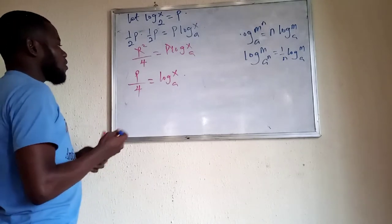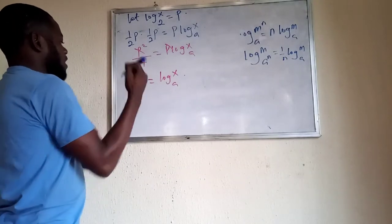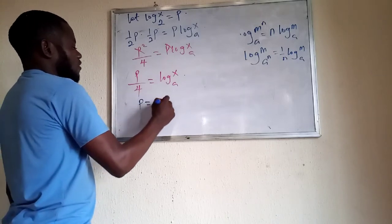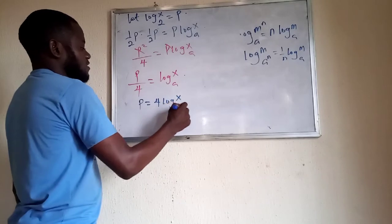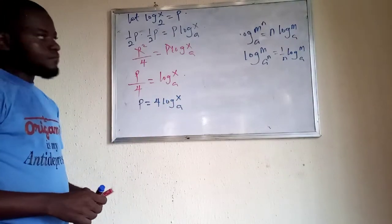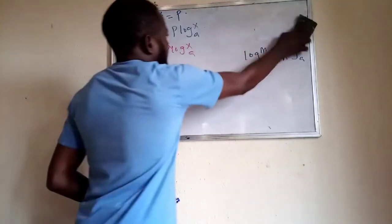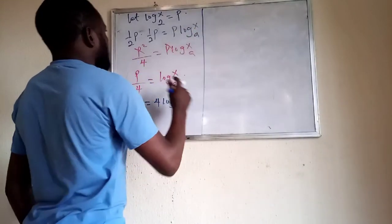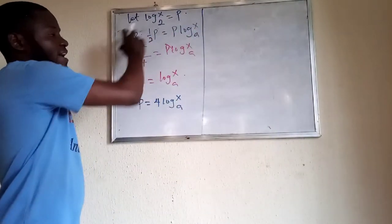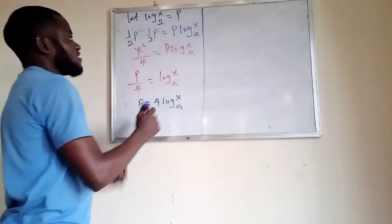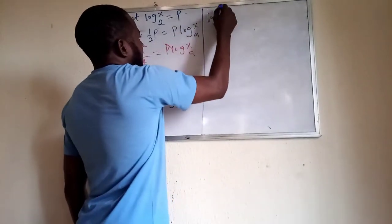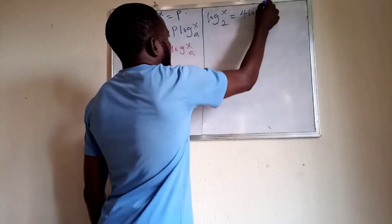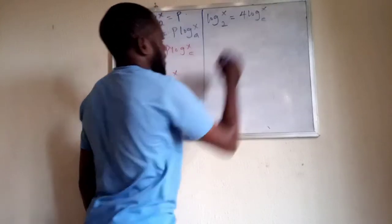If we now cross-multiply, we get p equals 4 log x in base a. Recalling that p is the same thing as log x in base 2, we can rewrite this as log x in base 2 equals 4 log x in base a.